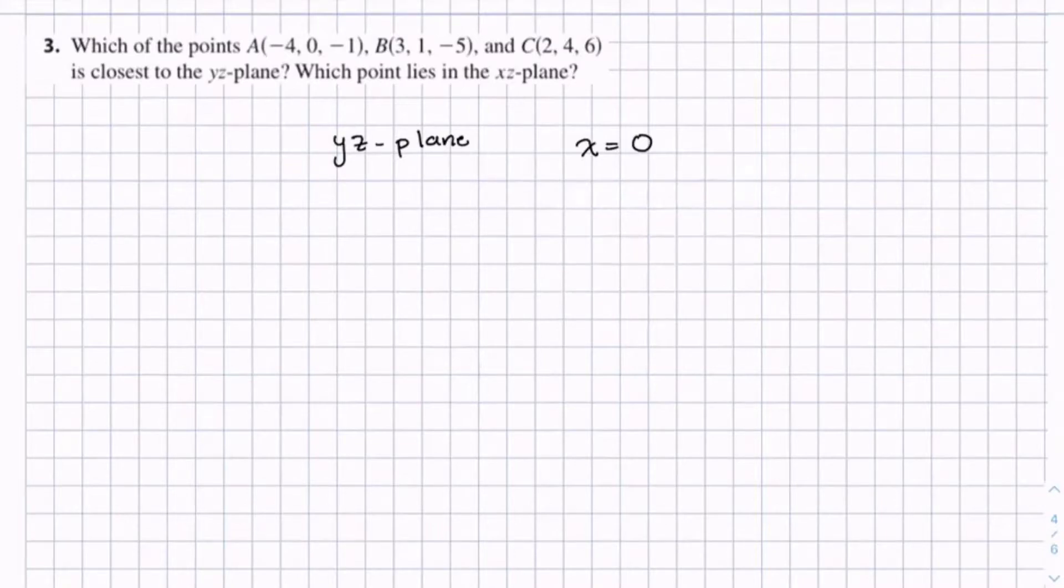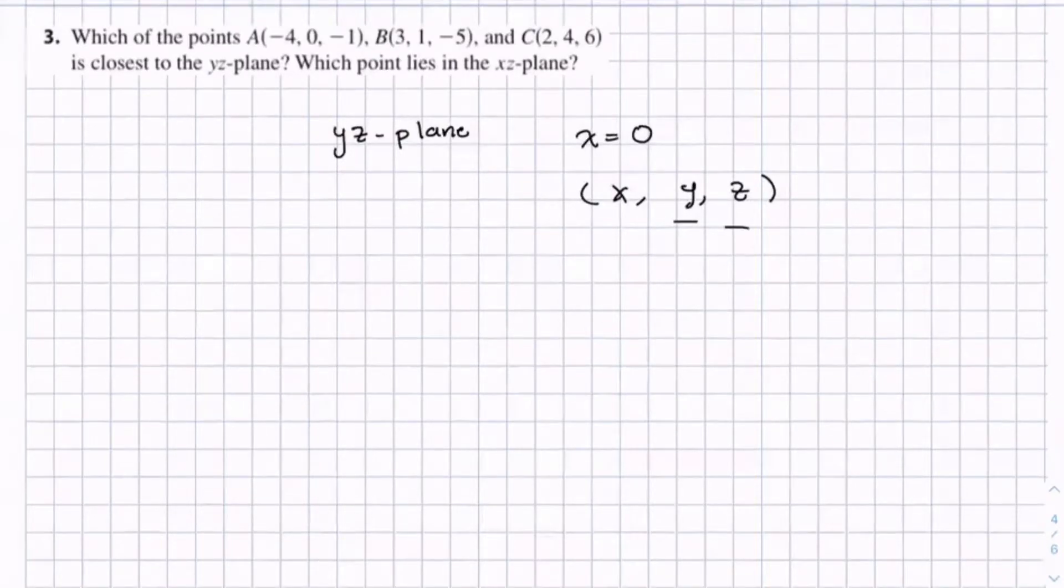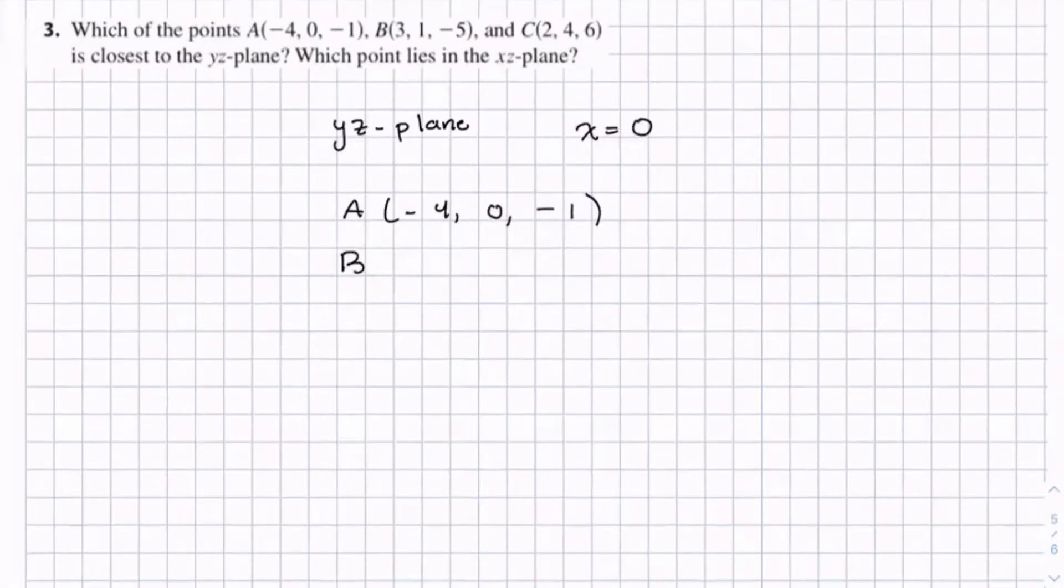So when we look at the points, we don't need to consider y and z, because both of those lie in the yz-plane. So let's look at the three points. We have A(-4, 0, -1), B(3, 1, -5), and C(2, 4, 6).